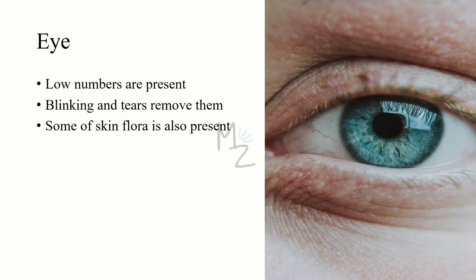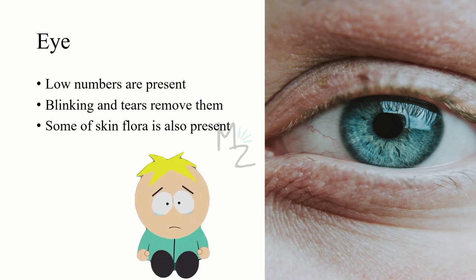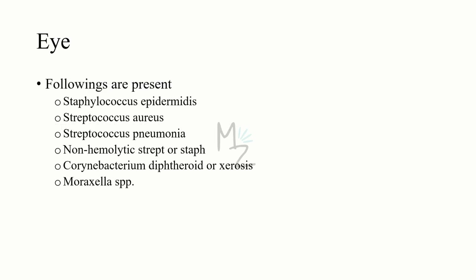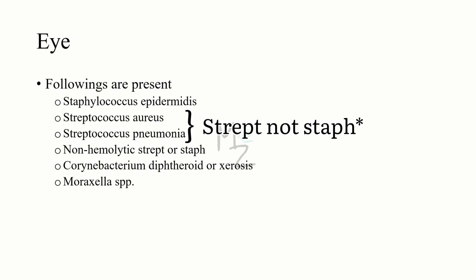Eyes. The number of normal flora present in our eyes is small. Blinking and tears constantly remove them, and some of the skin flora can also be present in the eye's normal flora. The microorganisms that form the eye's normal flora are Staphylococcus epidermidis, Staphylococcus aureus, Streptococcus pneumoniae, non-hemolytic streptococci or staphylococci, Corynebacterium (diphtheroid or xerosis), and Moraxella species.